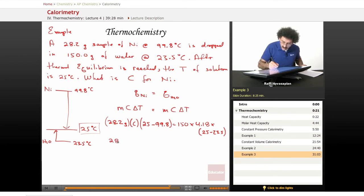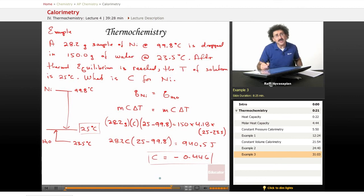So let's go 28.2 C times 25 minus 99.8 equals 940.5 joules. When we run through this math, we multiply this by this, divide through. We should end up with 0.446. This is the heat capacity for the nickel. This is in joules per gram per degree Celsius.